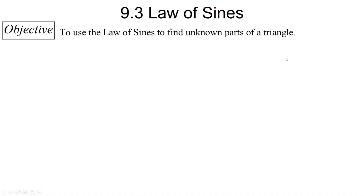Welcome to 9.3. Today we're going to study the Law of Sines, and our objective will be to use the Law of Sines to find unknown parts of a triangle. Basically, the Law of Sines gives us the tools to take many triangles that are not right triangles and solve them — meaning, given enough information, we can find the length of all three sides and all three angles.